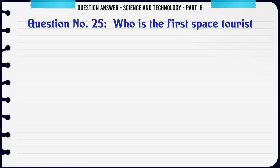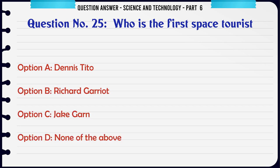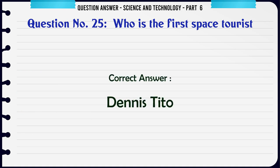Who is the first space tourist? A. Dennis Tito. B. Richard Garriott. C. Jake Garn. D. None of the above. The correct answer is Dennis Tito.